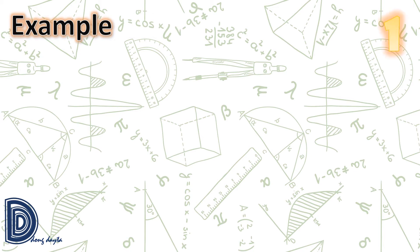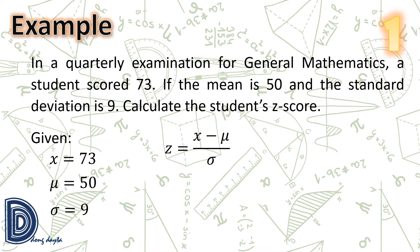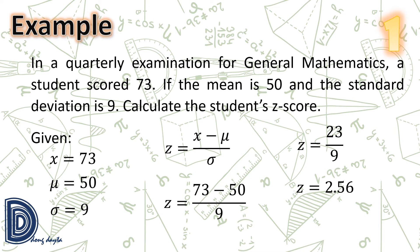Example number one: in a quarterly examination for general mathematics, a student scored 73. If the mean is 50 and the standard deviation is 9, calculate the student's z-score. Given: x = 73, mu = 50, sigma = 9. Using the formula z = (x − mu) / sigma, we substitute: z = (73 − 50) / 9 = 23 / 9. Hence, the student's z-score is equal to 2.56.